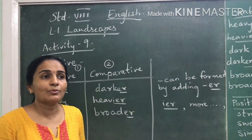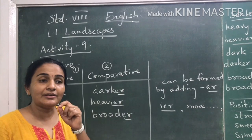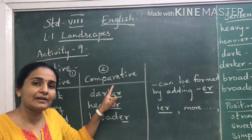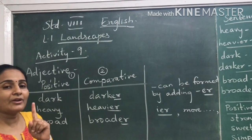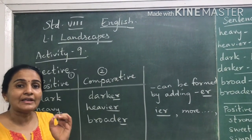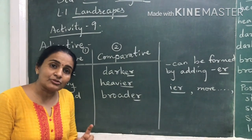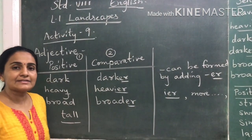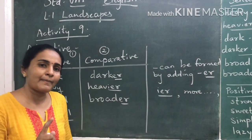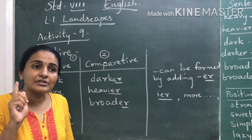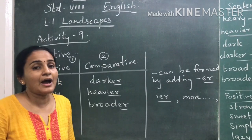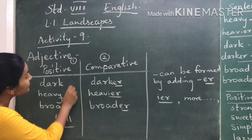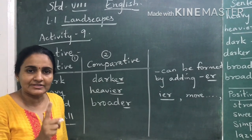One more thing to learn about adjectives is that they come in different degrees of comparison. In Activity 9 you have the positive degree and comparative degree. Positive degree is used when we talk only about one thing. For example, 'he is a tall boy' — we are talking only about one boy, not comparing him to anybody else. So positive degree is used when we talk about one thing or one person.